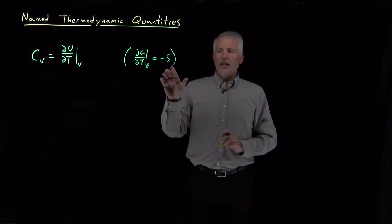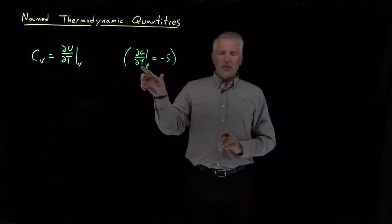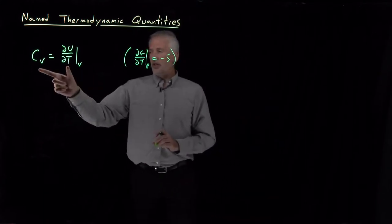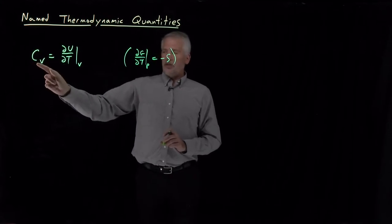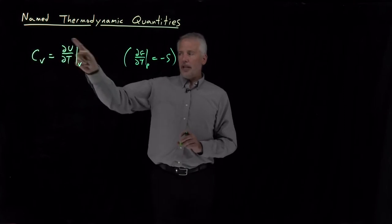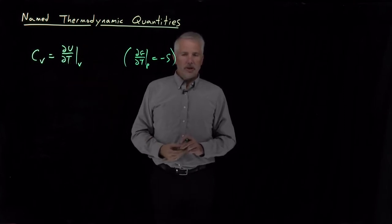That's a useful thermodynamic relationship between variables that existed before we wrote this equation down. This equation, the heat capacity, is just the thing we've defined to be equal to this ratio. We've just given a name to this particular thermodynamic relationship.